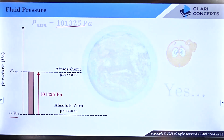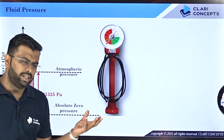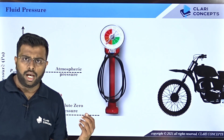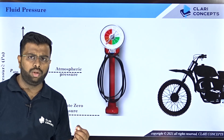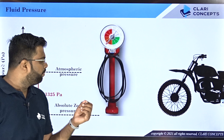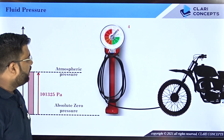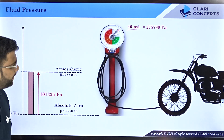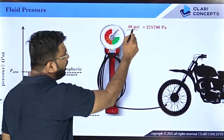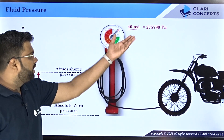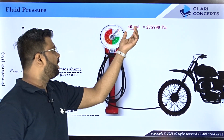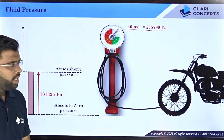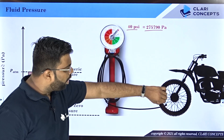Most of you go to a bike service center to fill air in your tube. When you want to make sure the appropriate amount of air is filled, you measure it using a pressure gauge. It is said that normally in a bike, 35 to 40 PSI pressure should be maintained. PSI is pounds per square inch — it is a unit of pressure. If you want to convert this into Pascal, this will give you 275790 Pascal. This is the pressure that the air should have within your tube.